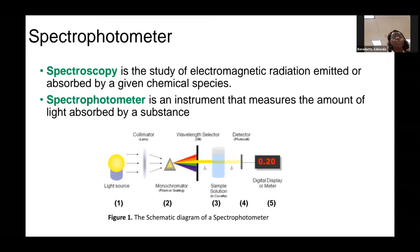First, I will introduce you to a spectrophotometer. Spectroscopy is the study of electromagnetic radiation emitted or absorbed by a given chemical species. The instrument that uses spectroscopy is called a spectrophotometer. A spectrophotometer is an instrument that measures the amount of light absorbed by a substance.